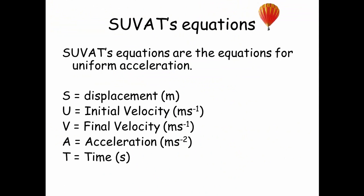S is equal to the displacement, and that's in meters. U is the initial velocity, that's in meters per second. V is the final velocity, also in meters per second. A is acceleration, that's in meters per second squared, and T is time, measured in seconds.